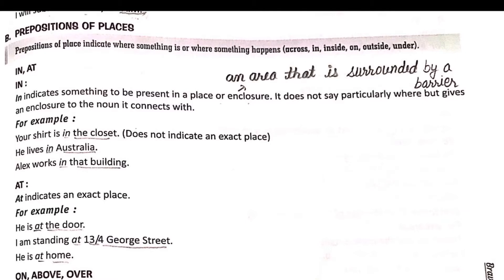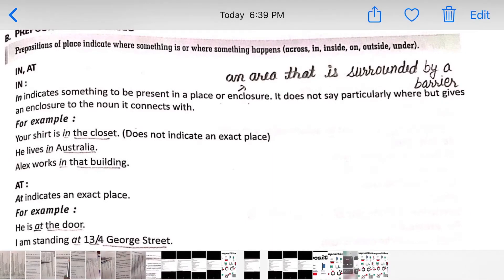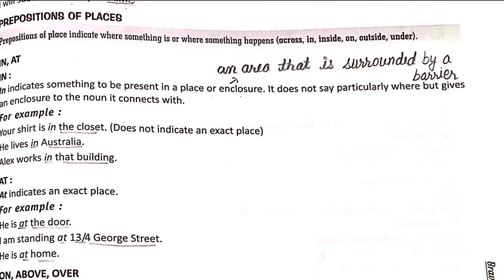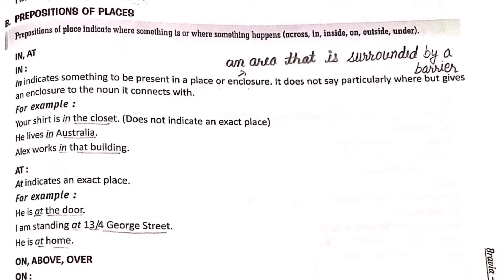First, let us discuss 'in'. In indicates something to be present in a place or enclosure. An enclosure is an area that is surrounded by a barrier — like your room, which is surrounded by four walls. It does not say particularly where, but it gives an enclosure to the noun it connects with.